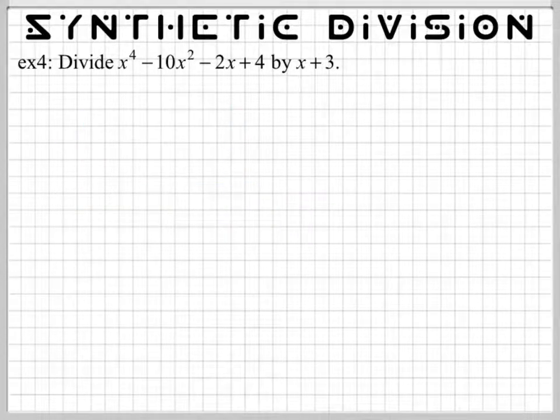Let's start out like this then. First thing you do is write down all of the coefficients of what you're trying to divide. Now, are there missing terms in there? Yeah, there's a missing x to the third. It should go right here. So we write down all the coefficients. We have 1, 0, negative 10, negative 2, and 4. We got that from here.